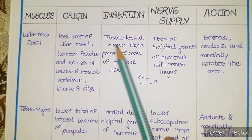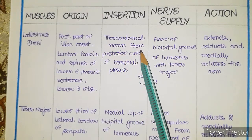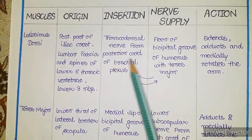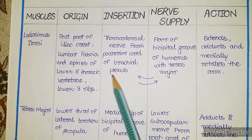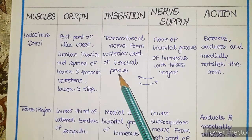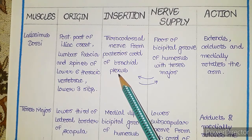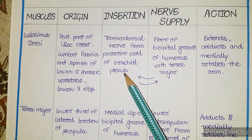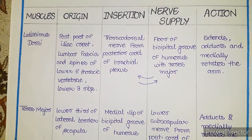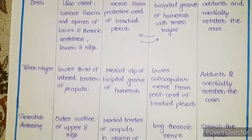The nerve which supplies the latissimus dorsi is the thoracodorsal nerve, which originates from the posterior cord of the brachial plexus. We will cover this in more detail when we study the brachial plexus later. For now, you have to memorize this.